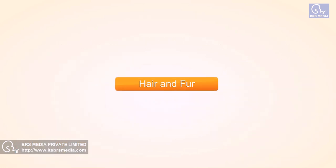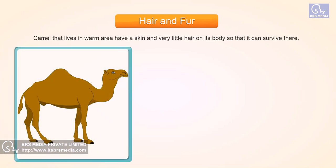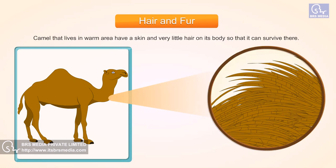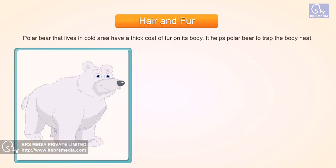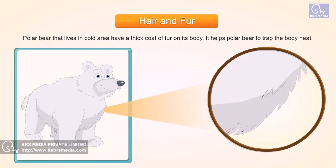Hair and Fur. Camels that live in warm areas have thin skin and very little hair on their body so that they can survive there. Polar bears that live in cold areas have a thick coat of fur on their body, which helps them to trap body heat.